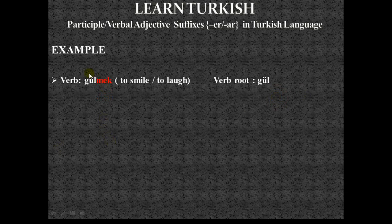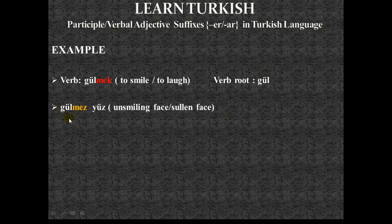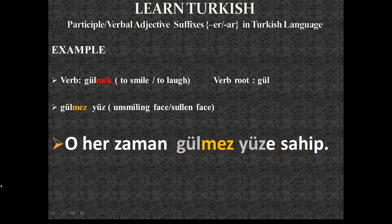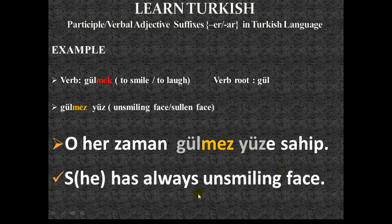Just as in the affirmative form, we use 'gülmek' (to smile, to laugh) again. The verb root is 'gül.' This time, by adding -mez, it becomes 'gülmez.' The noun is 'yüz,' giving 'gülmez yüz' — unsmiling face. As a synonym we can use 'asık yüz' in usage. Example sentence: 'O her zaman gülmez yüze sahip' — He or she always has an unsmiling face.